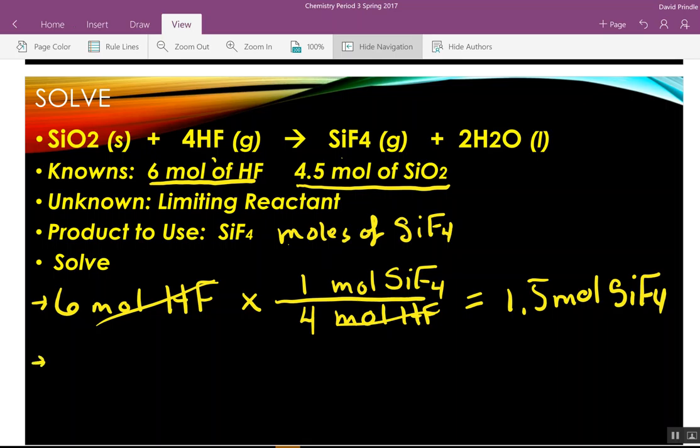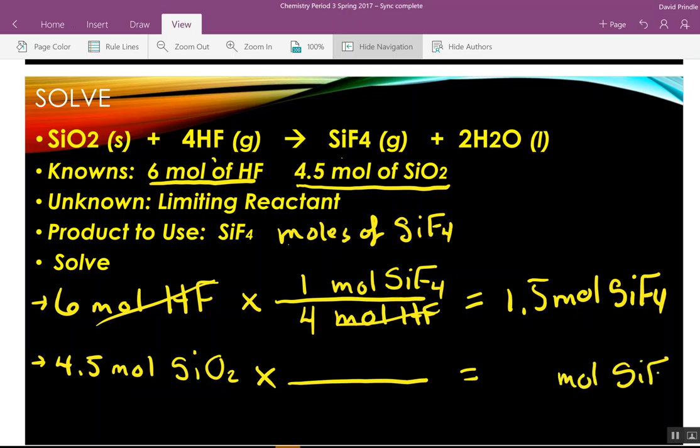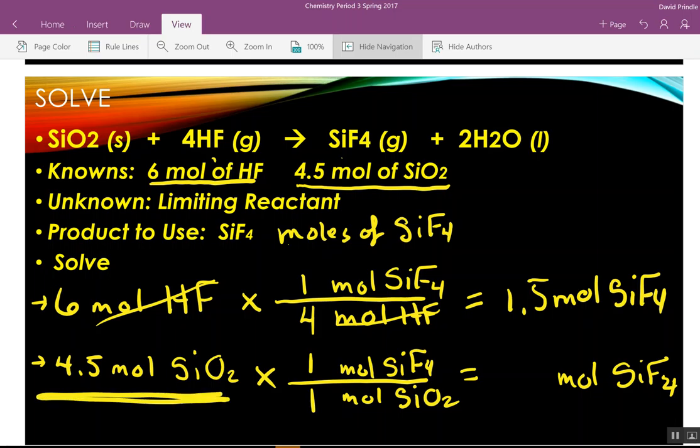Now, we do the problem again with four and a half moles of SiO2. So, we want to see if we have this much. How much of it we're going to make over here? So, we want to get to moles of SiF4 from moles of SiO2. What's the ratio of SiF4 to SiO2? One to one. So, if I start with four and a half moles of SiO2, how much am I going to make? Four and a half.